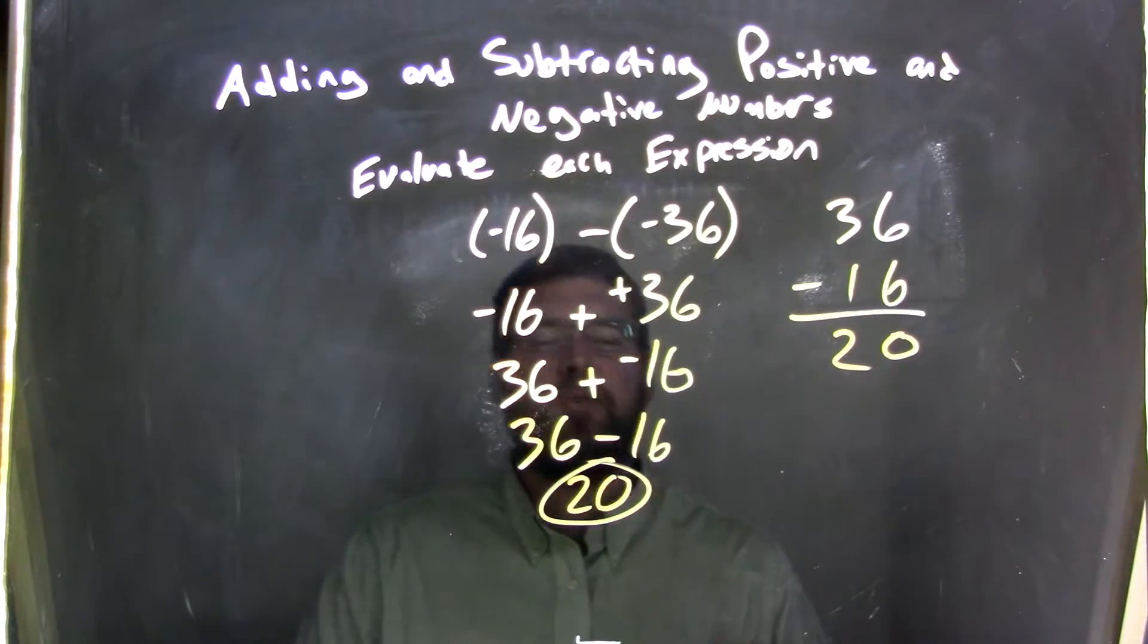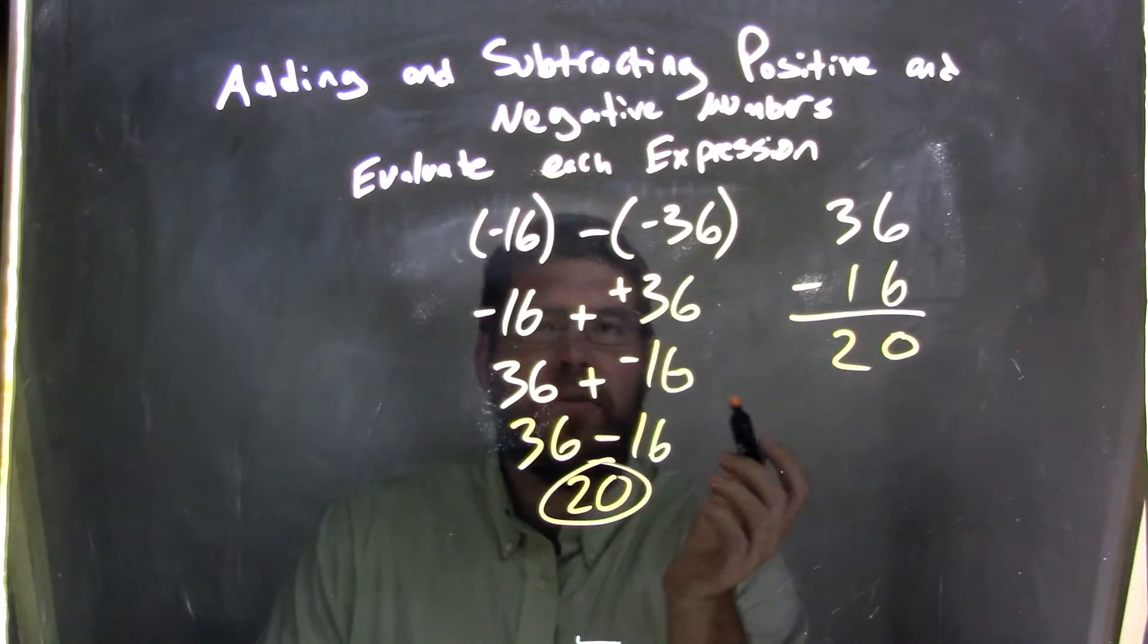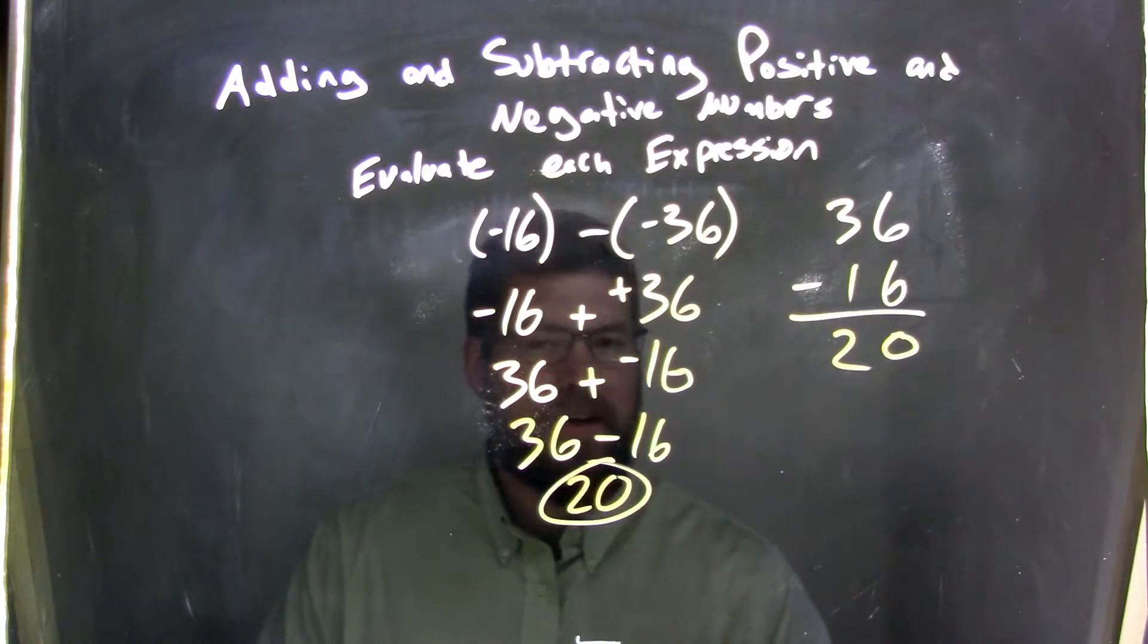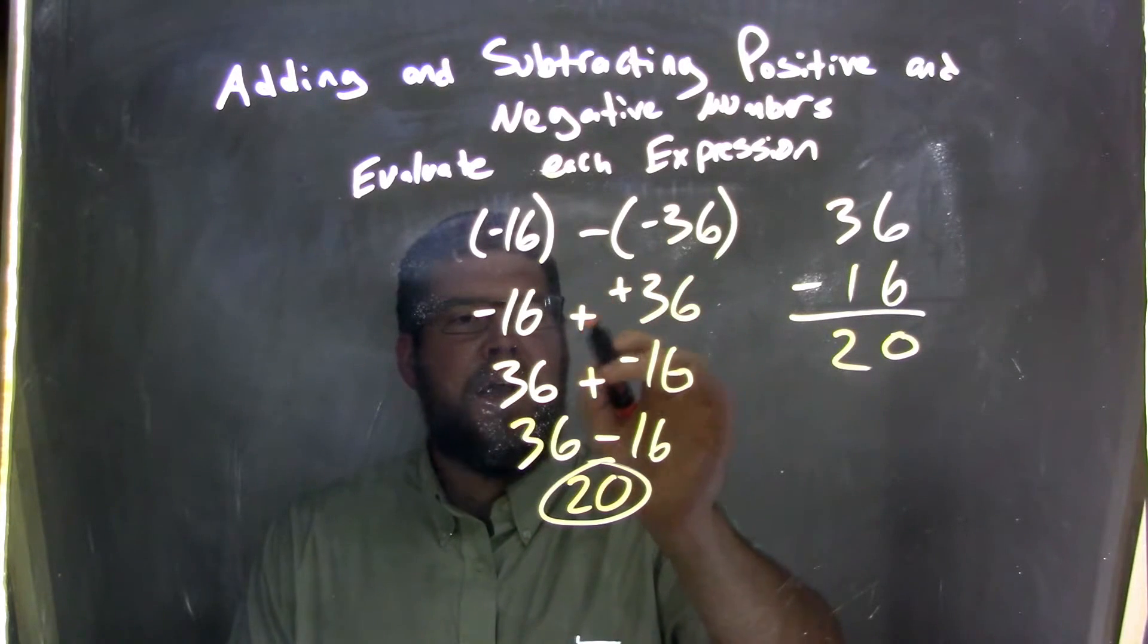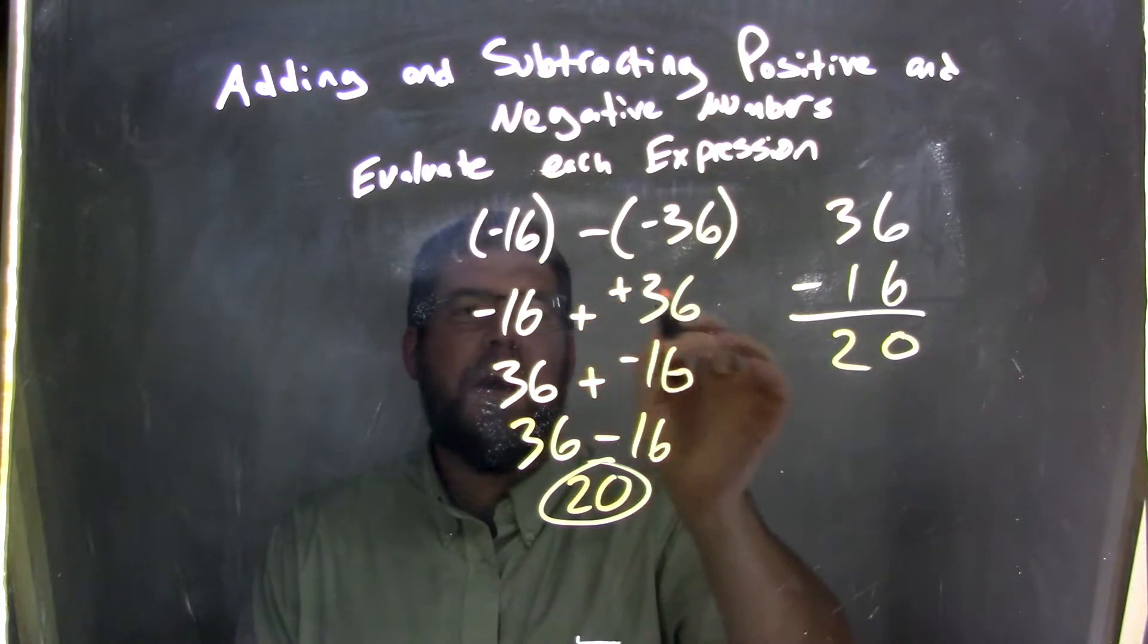So again, let's recap this one. This one was a little tricky. We had negative 16 minus a negative 36. There's a lot of negatives here. Well, minus a negative is the same thing as adding a positive. So we have negative 16 plus a positive 36.